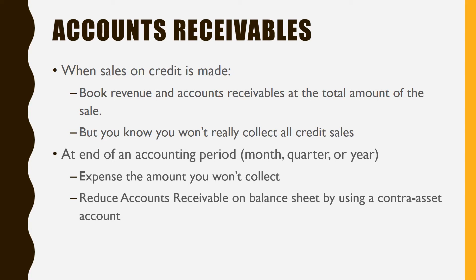We want to keep accounts receivable at the total amount because we really don't know which customer is not going to pay — we just know some of them won't. So we're going to use a contra asset account, meaning an asset account that goes on the asset side of the balance sheet but has a credit balance. Contra means opposite. We'll call this an allowance account — either allowance for bad debts or allowance for uncollectibles.